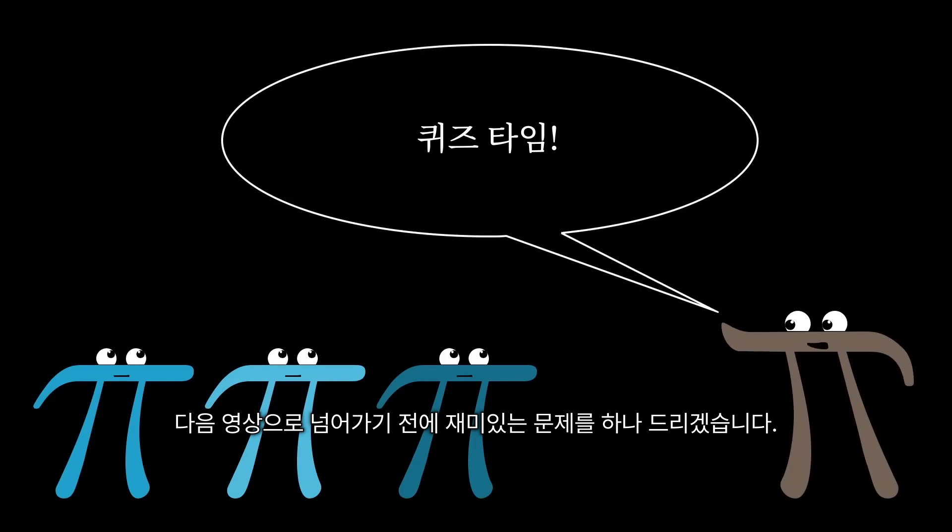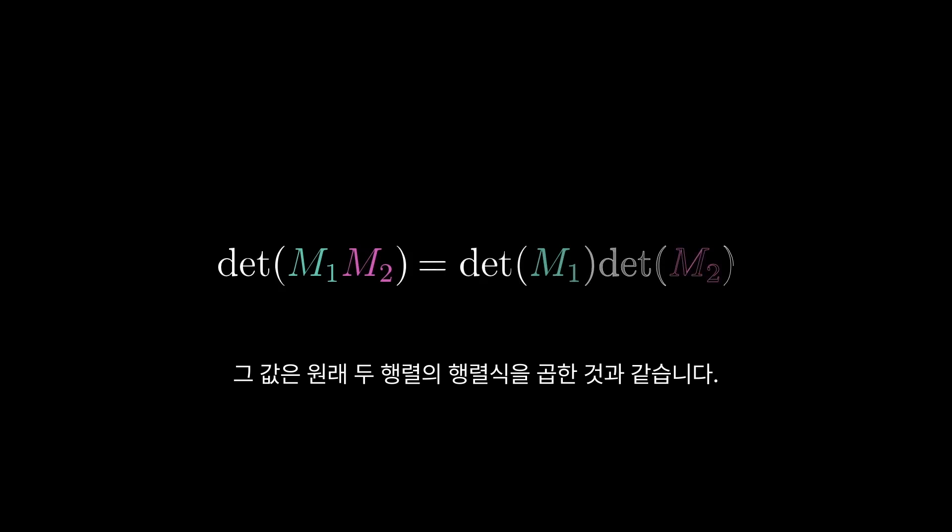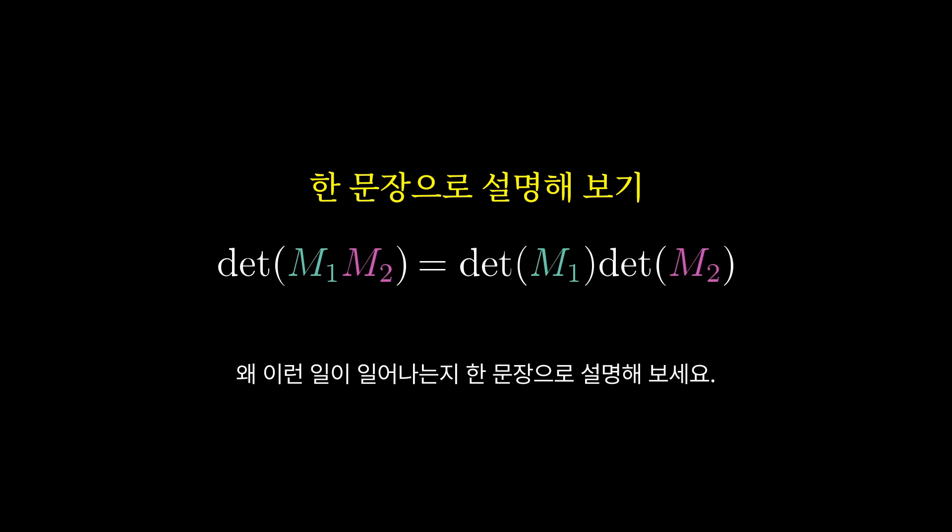Here's kind of a fun question to think about before the next video. If you multiply two matrices together, the determinant of the resulting matrix is the same as the product of the determinants of the original two matrices. If you tried to justify this with numbers, it would take a really long time, but see if you can explain why this makes sense in just one sentence.